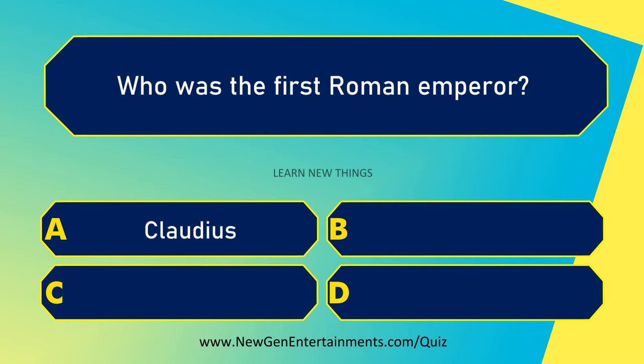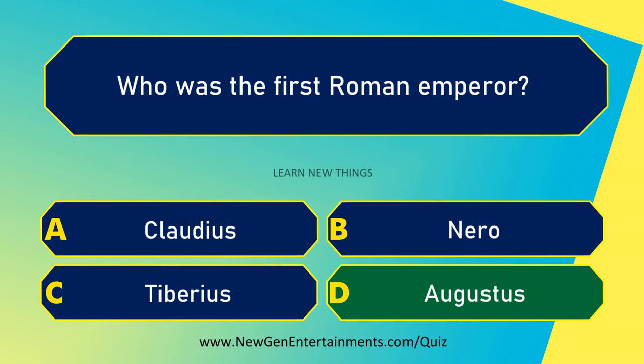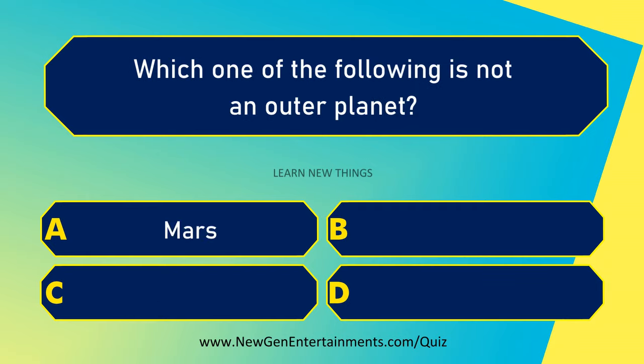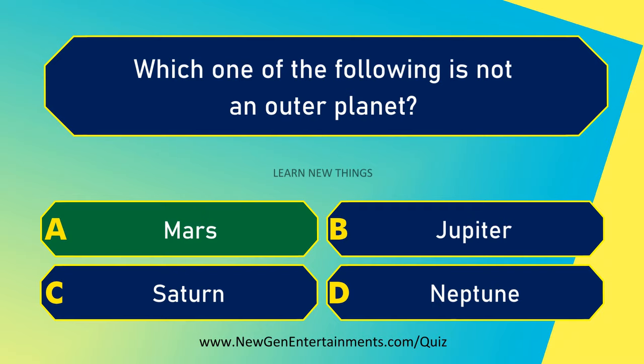Who was the first Roman Emperor? Augustus. Which one of the following is not an outer planet? Mars.